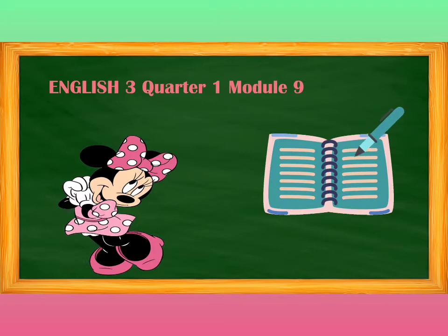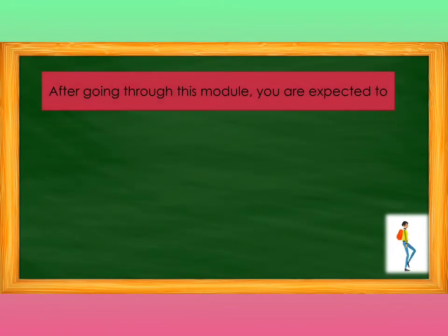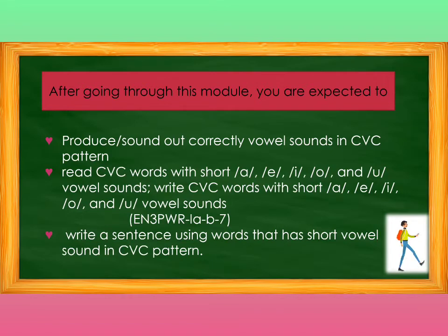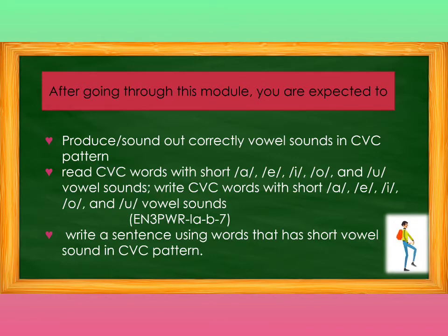Before we begin, I want you to get your English 3 Quarter 1 Module 9, together with your pen and your notebook. It is better for learning and remembering when you write down important details of our lesson. After going through this module, you are expected to produce or sound out correctly vowel sounds in CVC pattern, read CVC words with short A, E, I, O, U vowel sound, write CVC words with short vowel sound, and write a sentence using words that have short vowel sound in CVC pattern.